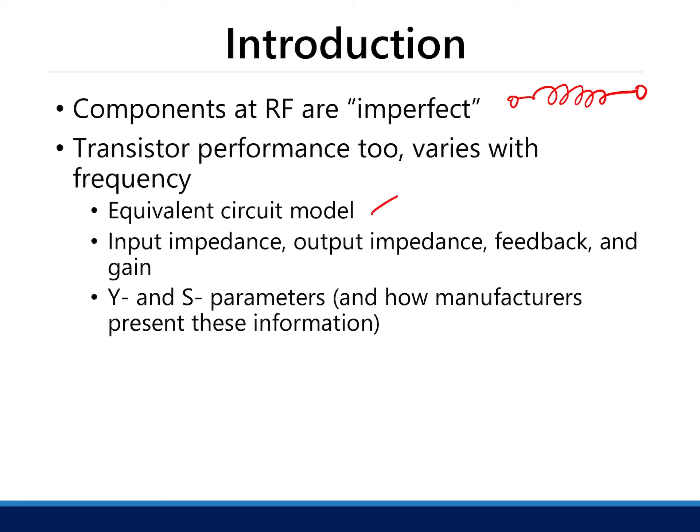First, we'll review the equivalent circuit model of transistors and add some imperfections to that. The parameters we're interested in are the impedances, the presence of feedback, and the gain of the transistor. Finally, we'll look at transistors with frequency using an abstraction — viewing them as a network using Y and S parameters and how manufacturers present this information.